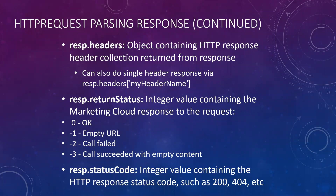One other thing to note on the headers object: if you get an error about CLR when you call resp.headers, talk to Marketing Cloud support. There is a business rule that is sometimes enabled and sometimes isn't that you need to have turned on to access this. Next up is return status — a simple integer: 0 is okay, -1 is an empty URL, -2 is call failed, -3 is call succeeded with empty content. Then we have the status code, which is the integer value of the response code — 200, 404, 201, 500, etc. This is the part you would use if you want calls to continue even if not successful, using conditional code to handle it.